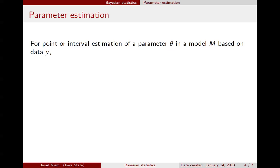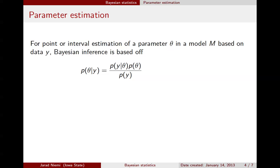The goal of parameter estimation is to either provide a point or interval estimate of a parameter theta that's in a model M, based on data y. In order to do that, the Bayesian approach is to describe the density of theta given y by applying Bayes' rule to that density. So the density of theta given y is equal to the density of y given theta times the density of theta, divided by the density of y.